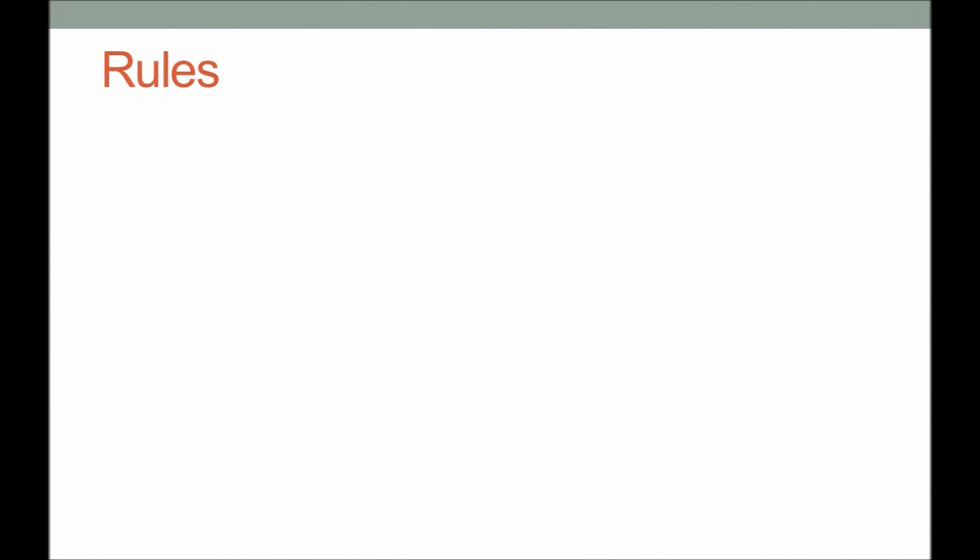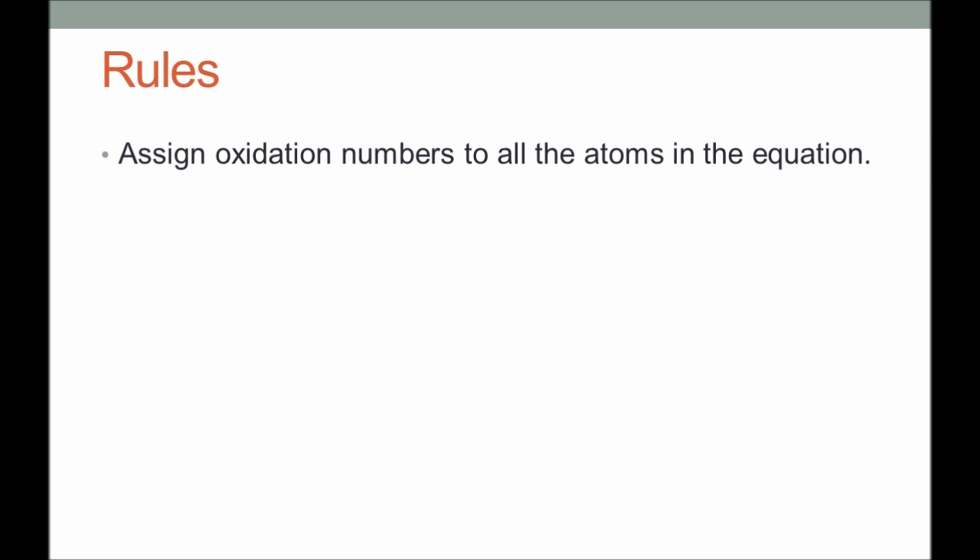The rules for balancing an equation using the oxidation number method are outlined here. The first thing to do is assign oxidation numbers to all atoms in the equation. You can refer to my earlier video on assigning oxidation numbers, and once you have gone through that, you should be able to determine the oxidation numbers of elements in the reactants and products.